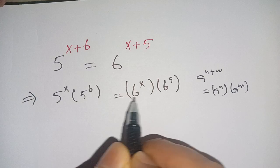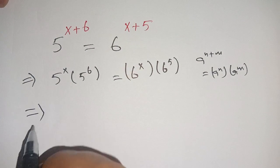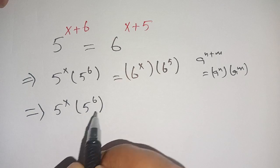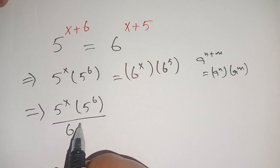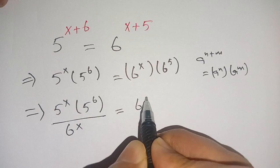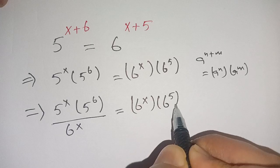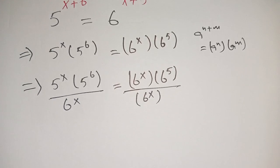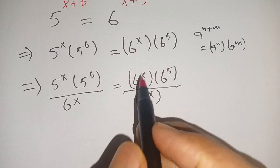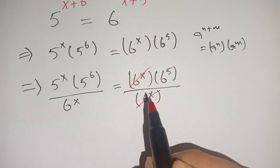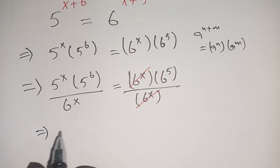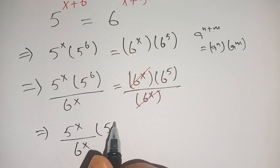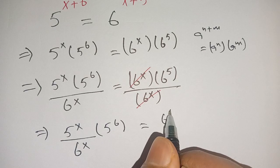We can write this as 5^x times 5^6 divided by 6^x is equal to 6^x times 6^5 divided by 6^x, on dividing both sides by 6^x. We can cancel out 6^x by 6^x. The remaining part is (5^x / 6^x) times 5^6 is equal to 6^5.